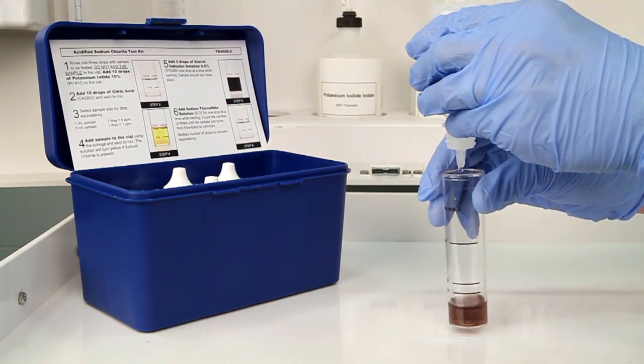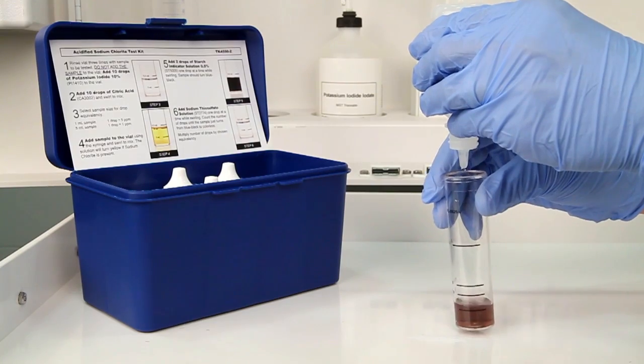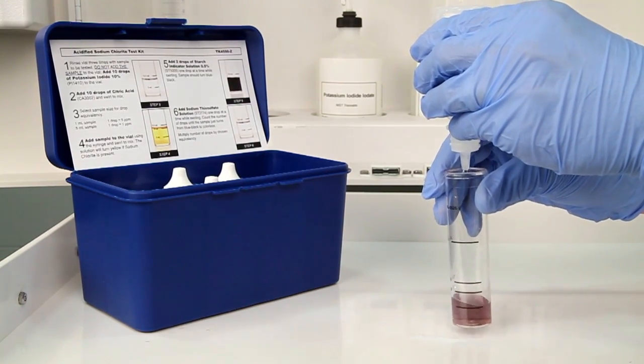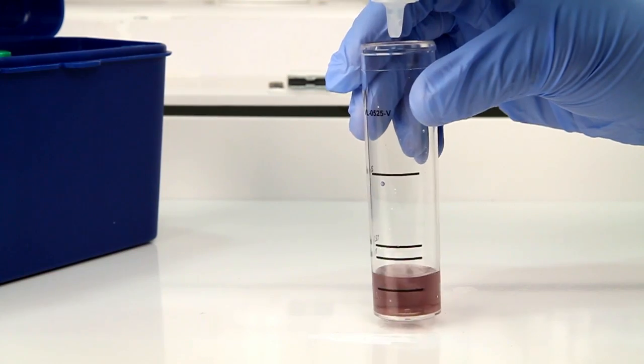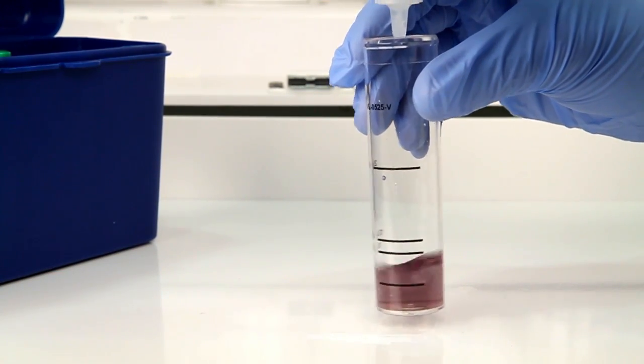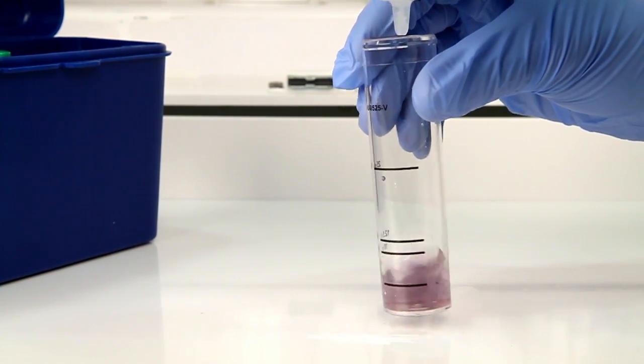The bottle contains a dropper tip, so it's important to hold the bottle vertically to get a consistent drop size. After the addition of each drop of titrant, swirl the vial to make sure the sample is properly mixed. Count the number of drops during this step.